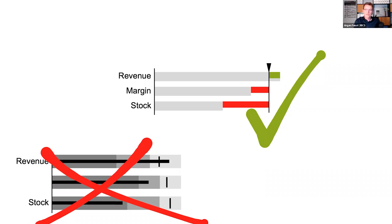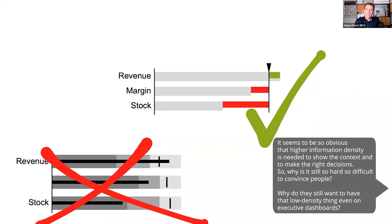There's a question from Fabio in the chat: it seems so obvious that higher information density is needed to show the context and make right decisions, so why is it still so hard to convince people? Why do they still want those low-density things, even on executive dashboards?